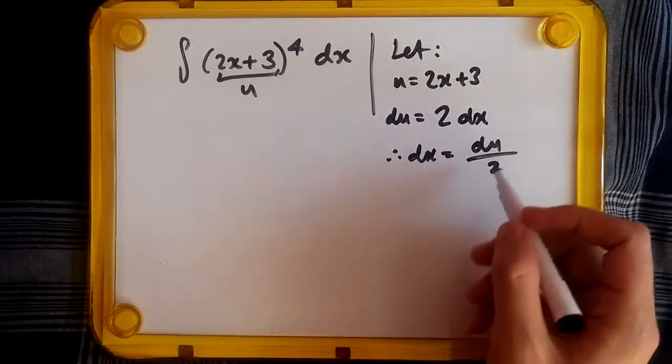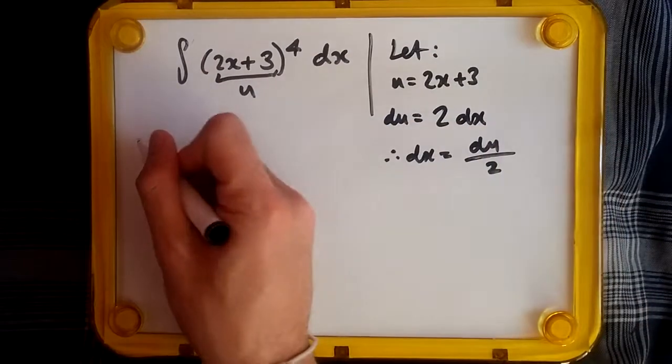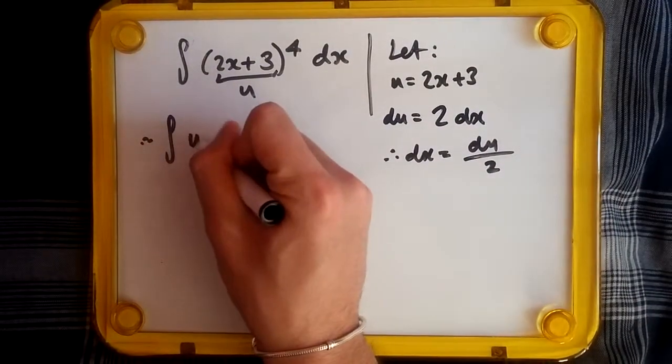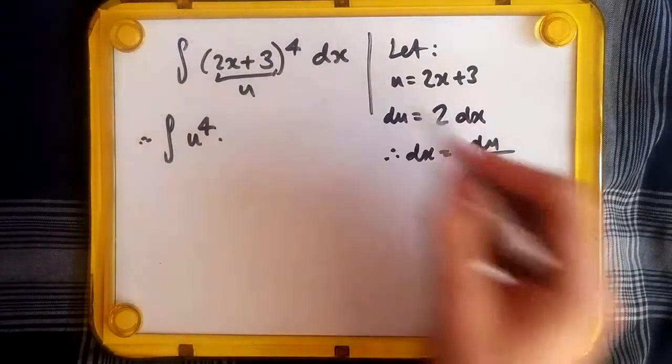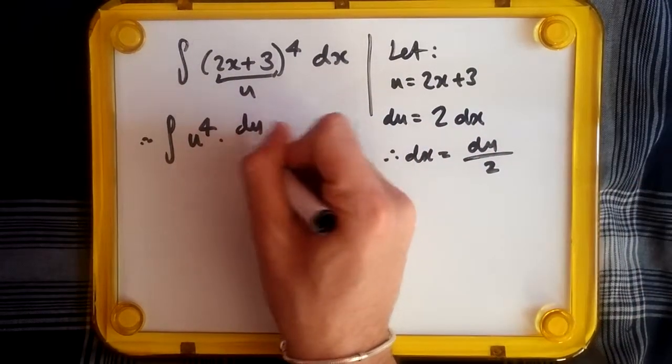Replacing dx with du/2 and replacing 2x+3 with u, this should give us a nice simple integral of u to the power 4 times du over 2.